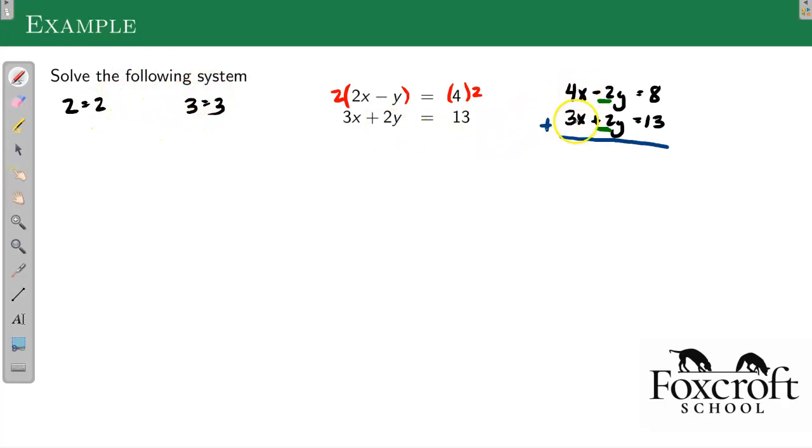So 4x and 3x becomes 7x, and minus 2y and positive 2y, they cancel out, so they're gone. And now on the right-hand side, I just have 21. So I've eliminated by adding these two equations in a way that gets rid of the y. Now I have a simple equation I can solve for x, just divide by 7, x is 3.